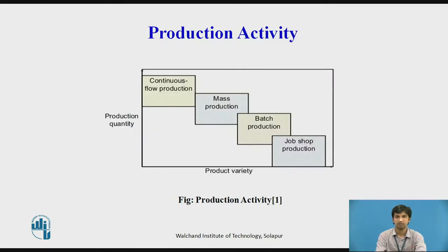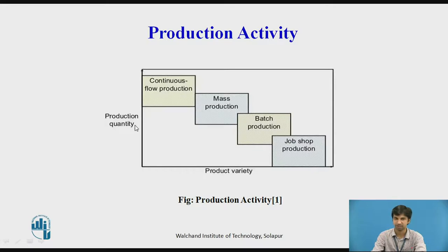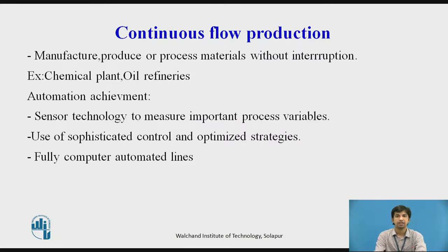Now let us discuss how automation is achieved in different types of production. In this graph we can see four types of production. We will be discussing in detail the variety and production quantity for each. Let us start with continuous flow production.